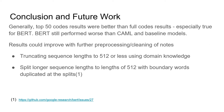As a conclusion and future work: the top 50 most common codes performed better than full codes for both our model and the Explainable Predictions model, confirming that predicting rarer codes is a tougher task. Our BERT still performed worse than CAML and baseline models, so results could be improved with further pre-processing and cleaning. This means truncating sequence lengths to 512 or less using domain knowledge, or better yet, splitting long sequences into lengths of 512 with boundary words duplicated at splits — an approach recommended by the producers of BERT at Google. Thank you.